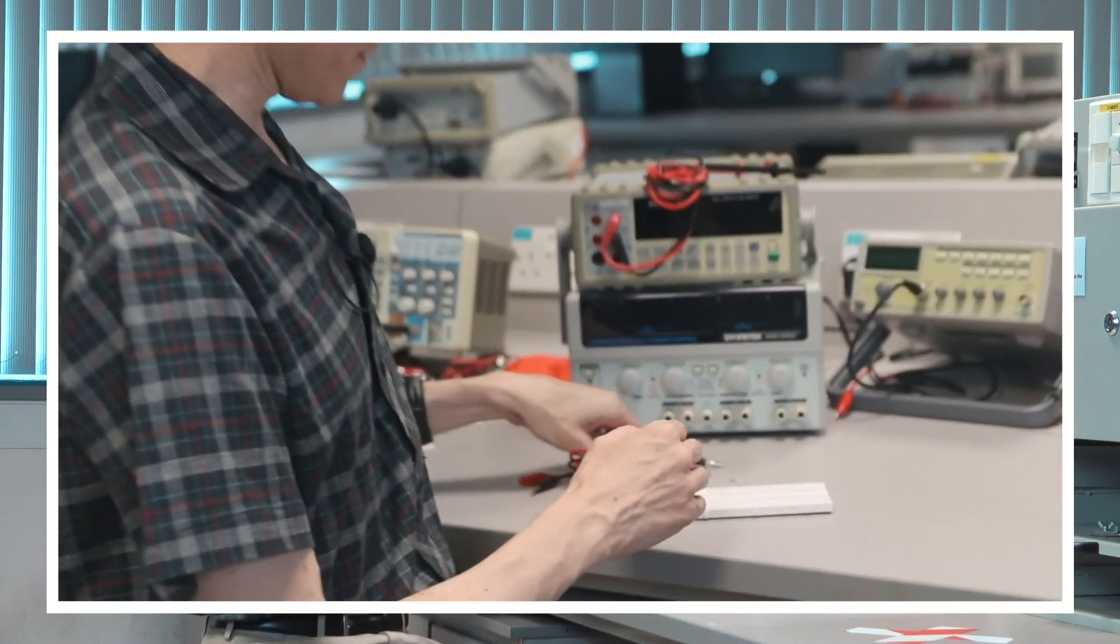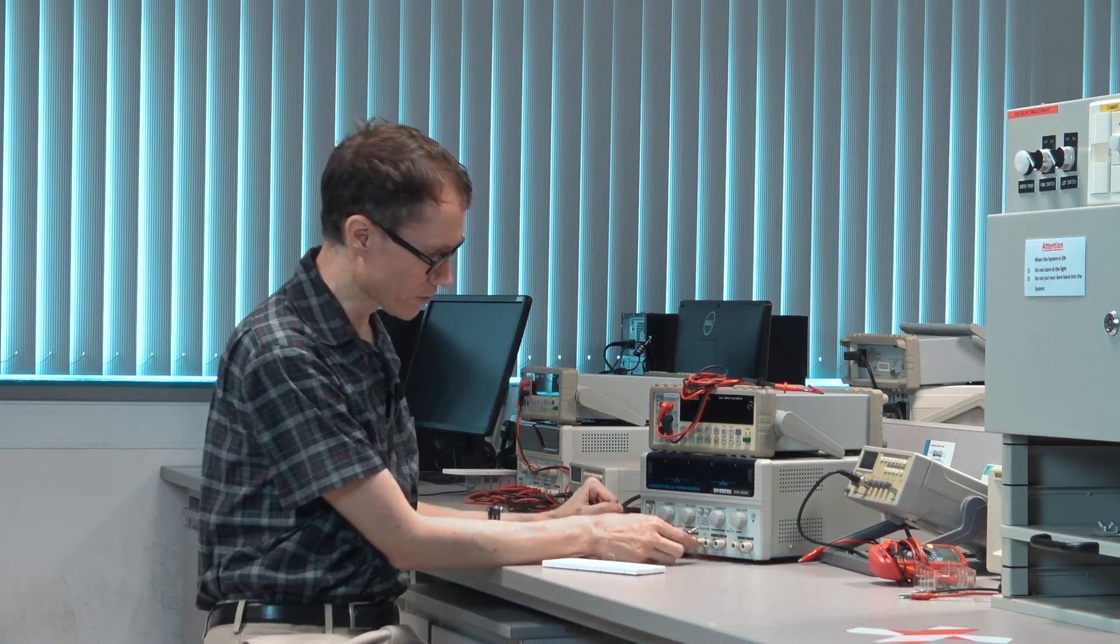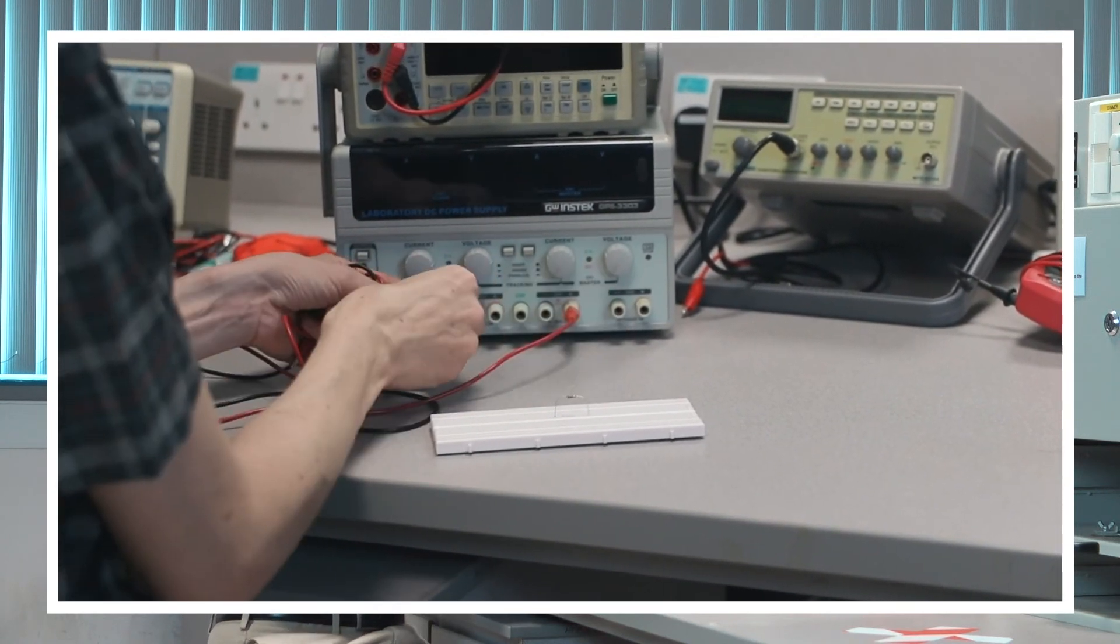So now let's go ahead and construct the circuit that I just drew. I've got here a 10 ohm resistor that's rated at a quarter watt and I'm going to hook it up to channel 1 of the DC power supply.